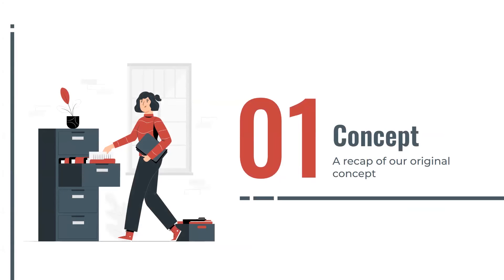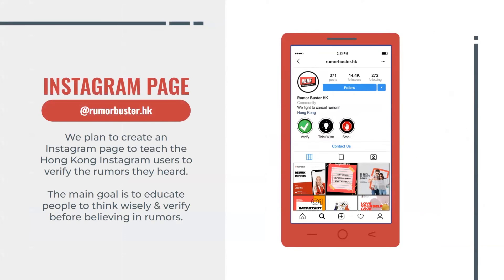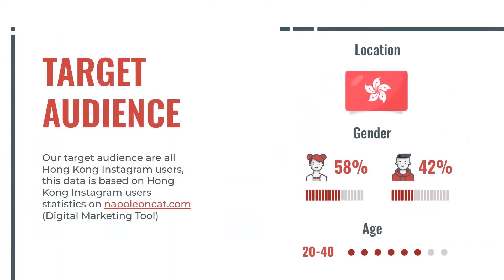Let's go through a recap of our original concept. We planned to make an Instagram page to provide tips and sources to help viewers verify whether something is a fact or a rumor. The target audience we mentioned is Hong Kong Instagram users. According to NapoleonCat.com, there are 58% female and 42% male Instagram users, aged around 20 to 40 years old.